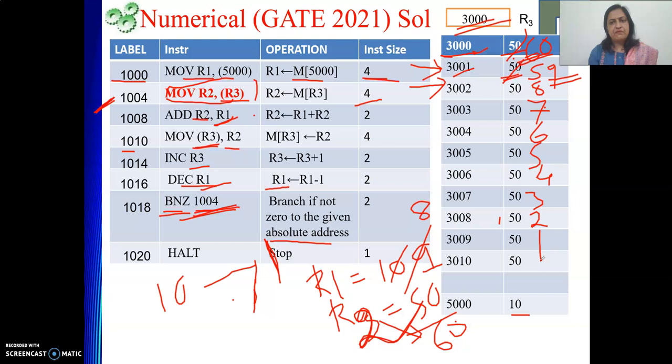Then for 3010, whether the loop will be executed? No. Because 10 times already we have executed. And in 10 times from 3000 to 3009, total is 10. Ten memory locations contents are updated: 60, 59, 58, 57 and so on. And I probably hope you are getting it also.